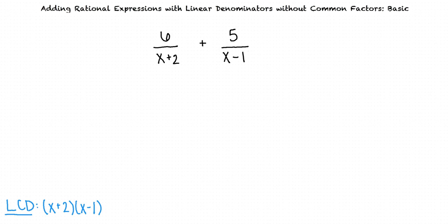In the first expression, 6 over x plus 2, the denominator already has the factor x plus 2. It is missing the factor x minus 1, so we can multiply this expression by x minus 1 over x minus 1. This results in 6 times the quantity x minus 1 over the quantity x plus 2 times the quantity x minus 1.